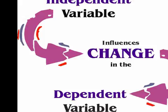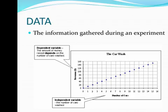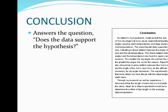The independent variable is what is changed in an experiment. The dependent variable then is what changes due to the independent variable. When you're doing an experiment, you collect data. Data is the information gathered during your experiment. And finally, based on the data, you're going to come to a conclusion. Your conclusion answers the question: does the data support the hypothesis?